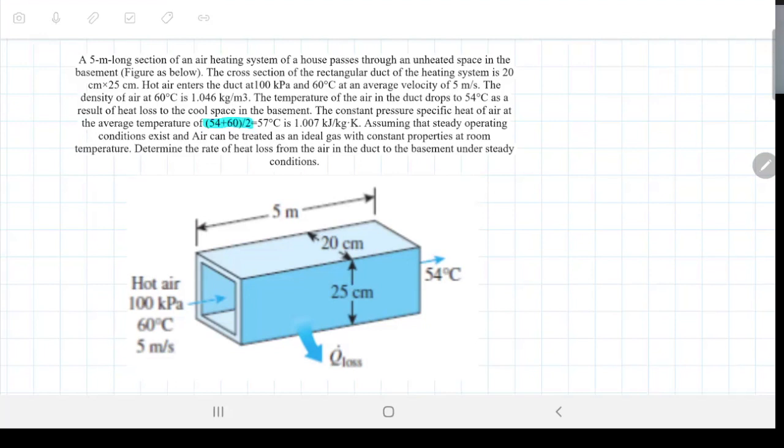The constant pressure specific heat of air at the average temperature of 57 is 1.007. Assuming steady operation conditions exist and the air can be treated as an ideal gas with constant properties at room temperature, determine the rate of heat loss from the air in the duct in the basement under steady conditions. So there's heaps of things to talk about. The question itself is quite simple, but the things to learn from it are important.